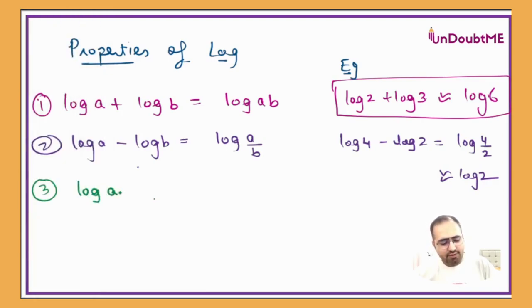So the next property of log is if I have log of a to the power b, then it will be b log a.